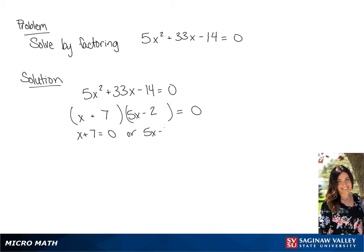We're setting each binomial equal to 0. So we have x plus 7 equals 0 or 5x minus 2 equals 0.